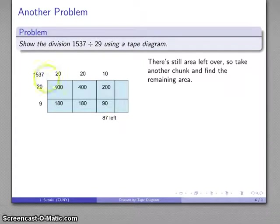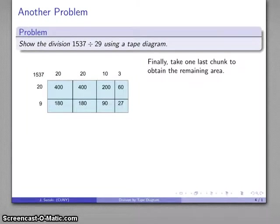And so after I do that subtraction, 290, there's going to be 87 left over as my area. And again, a piece of size 10 is too big, and I find that the last chunk must be of size 3.